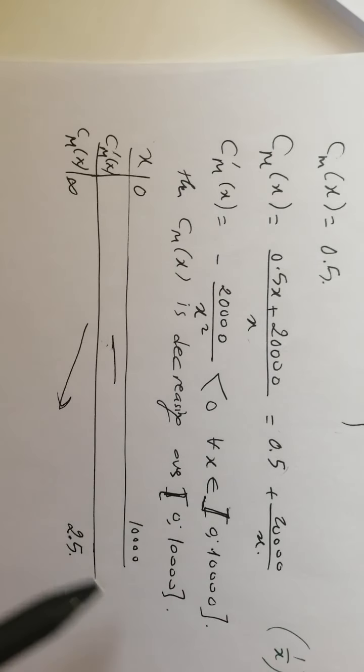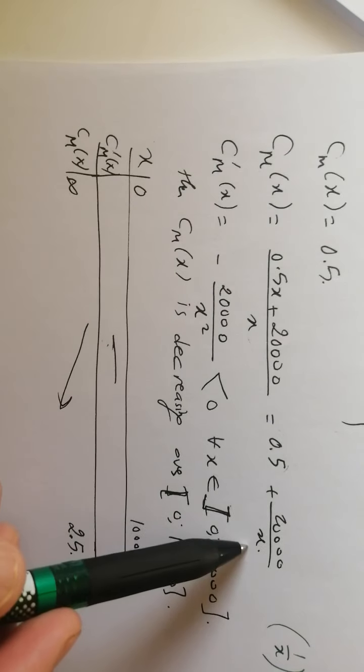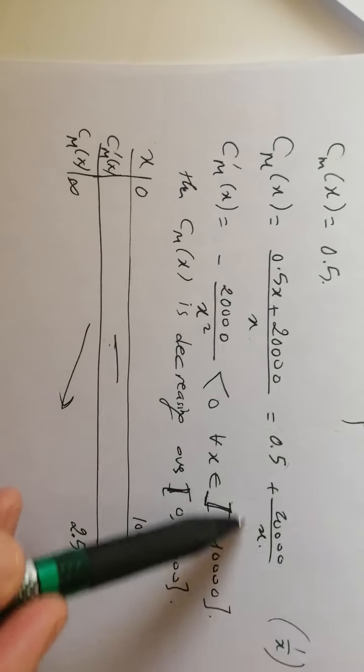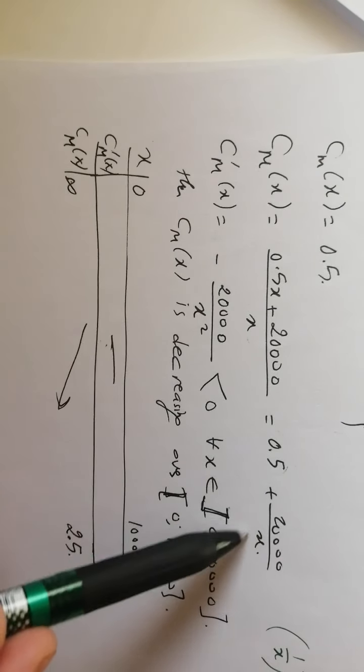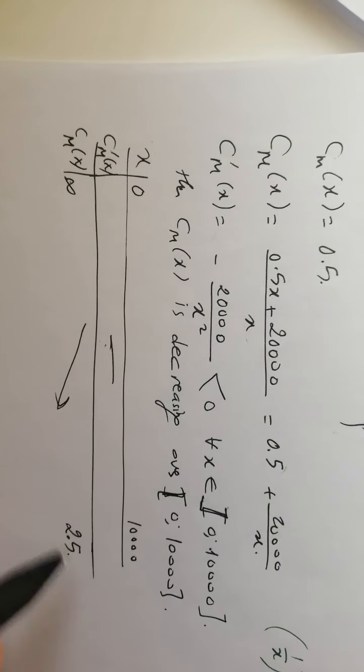The interval is 0 to 10,000. If we put 10,000 in for x, we get 20,000 over 10,000, which is 2, plus 0.5, meaning 2.5 dollars.